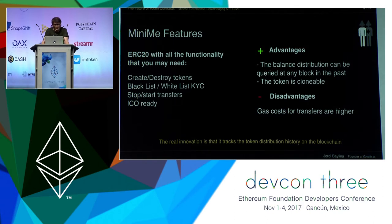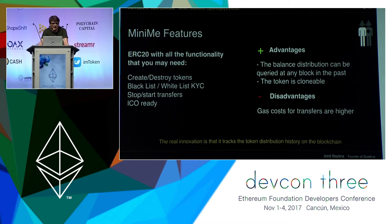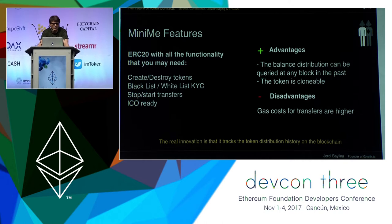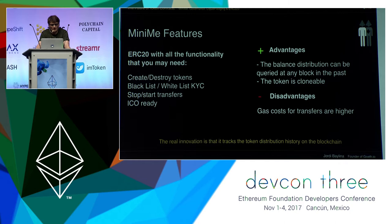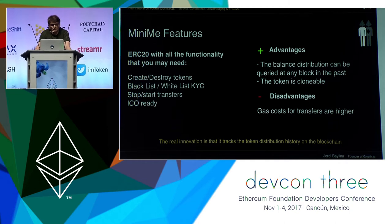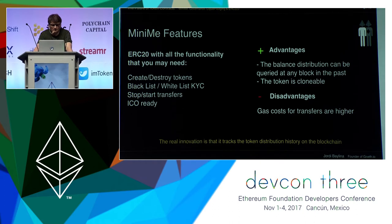So what makes the MiniMe contract different? It's more than just a simple ERC20 token contract. The token has many functionalities that any dApp may need. These functionalities include creating and destroying tokens, black or white listing addresses, freezing transfers, among others. But let's get to the real innovation of what this smart contract is.